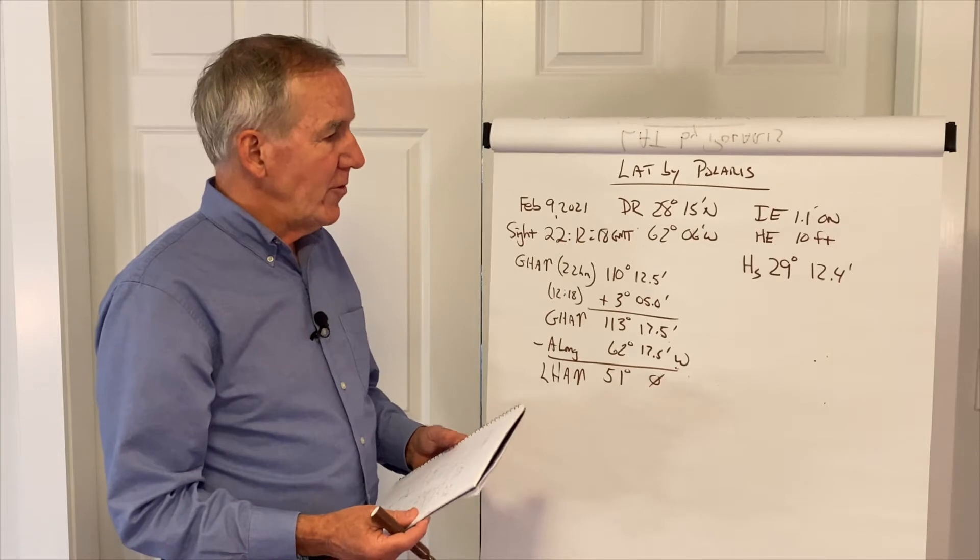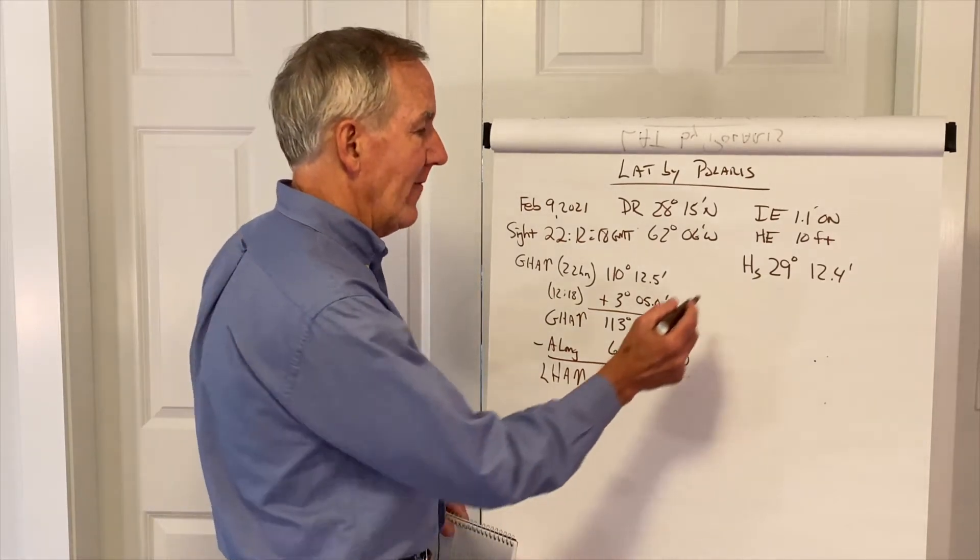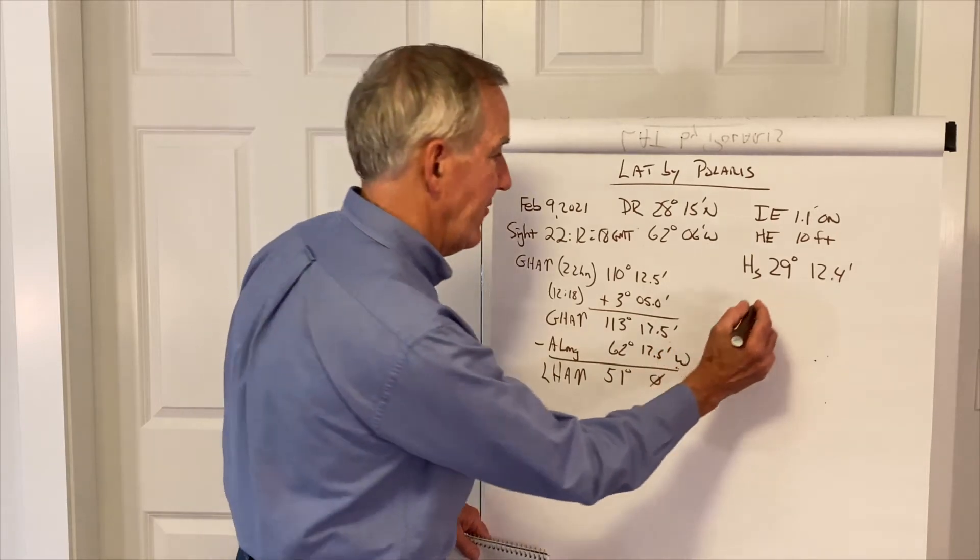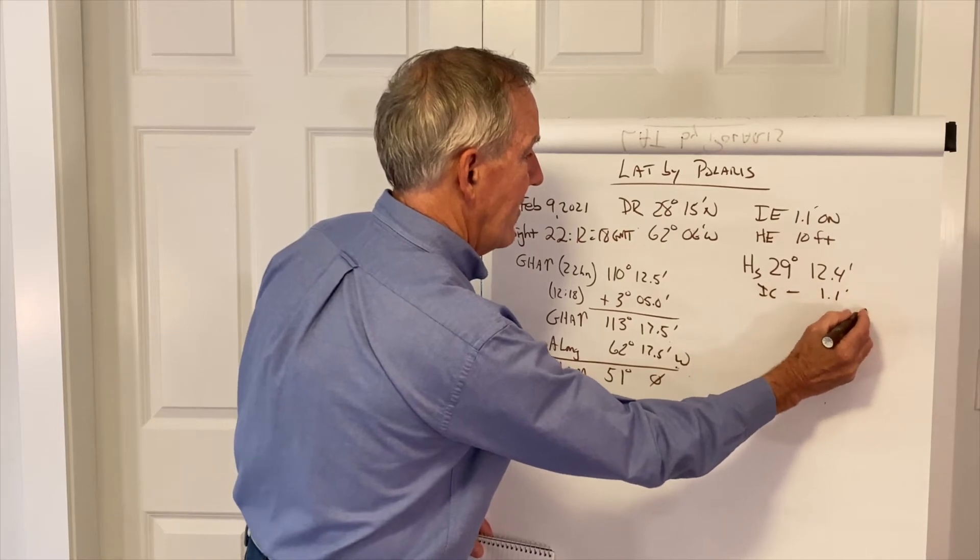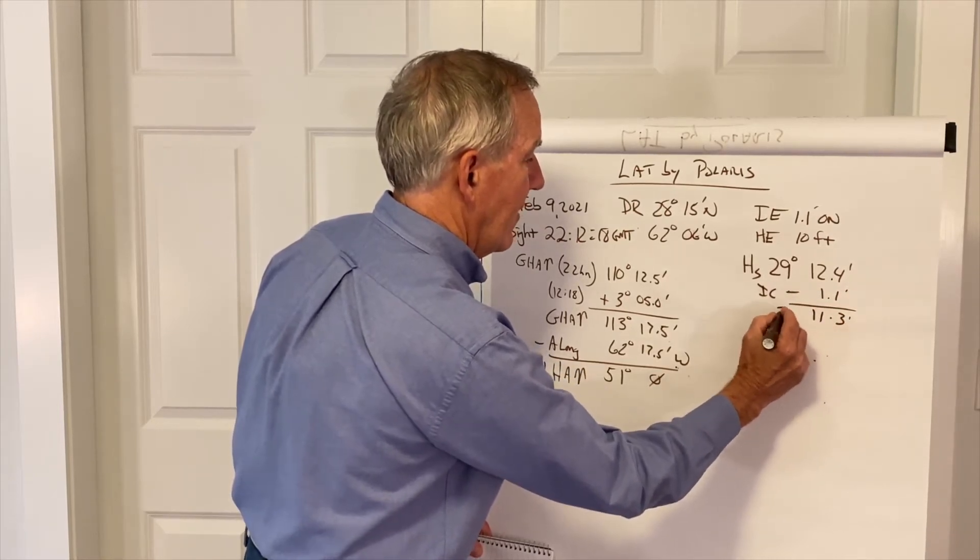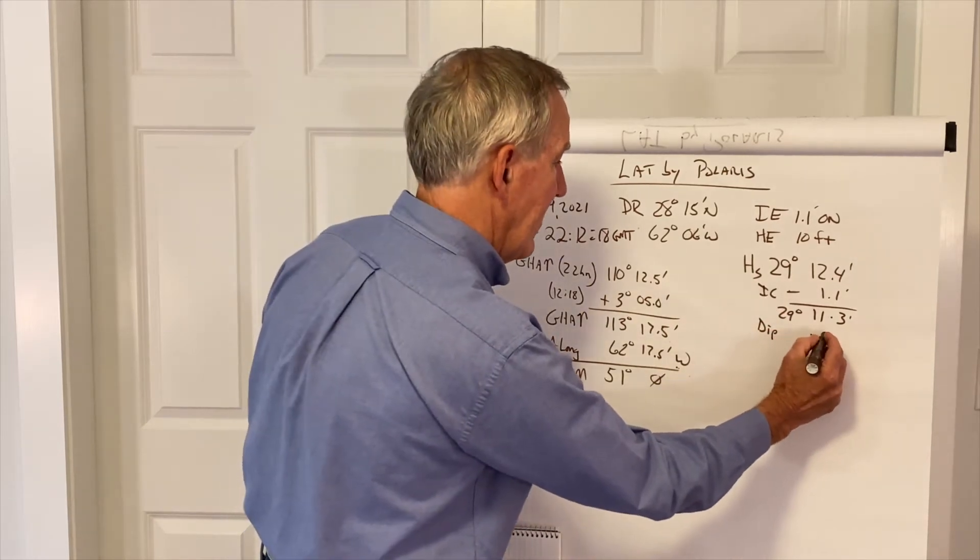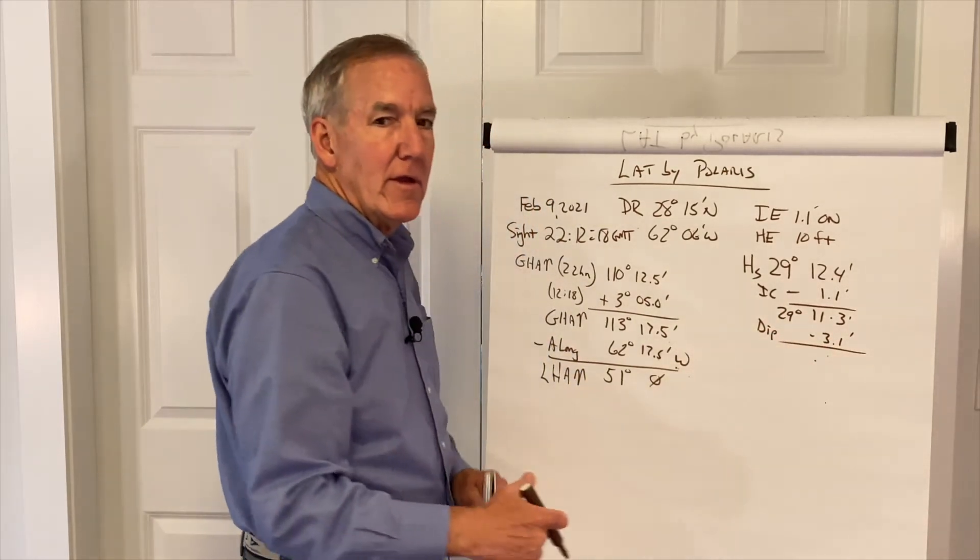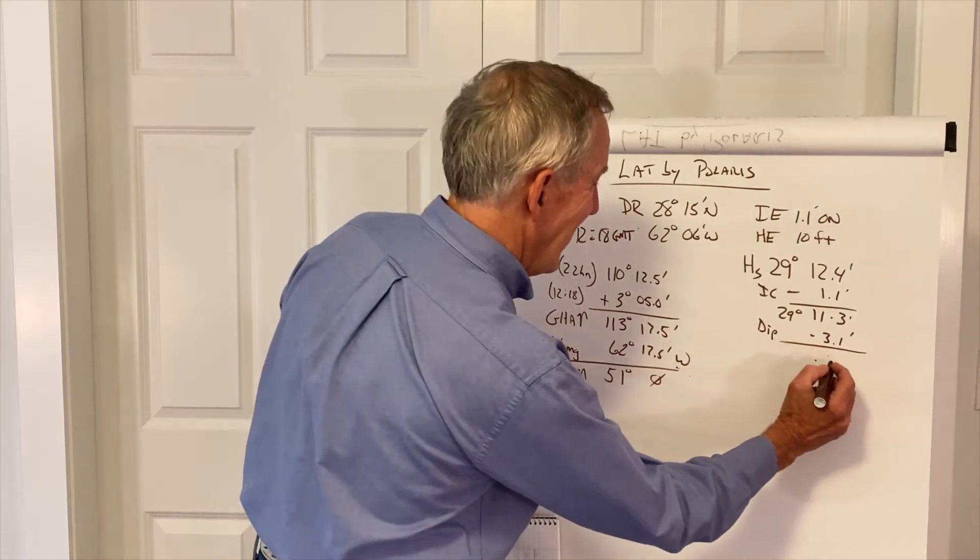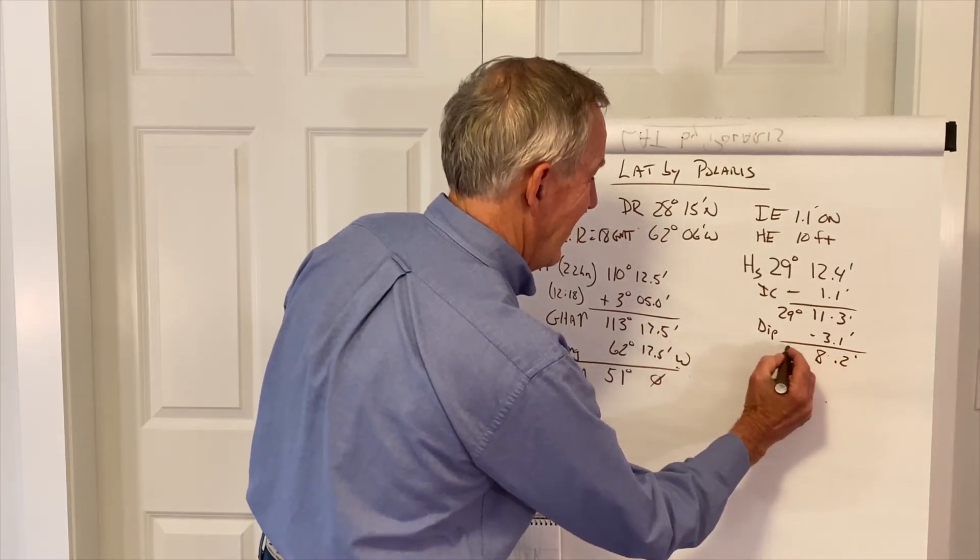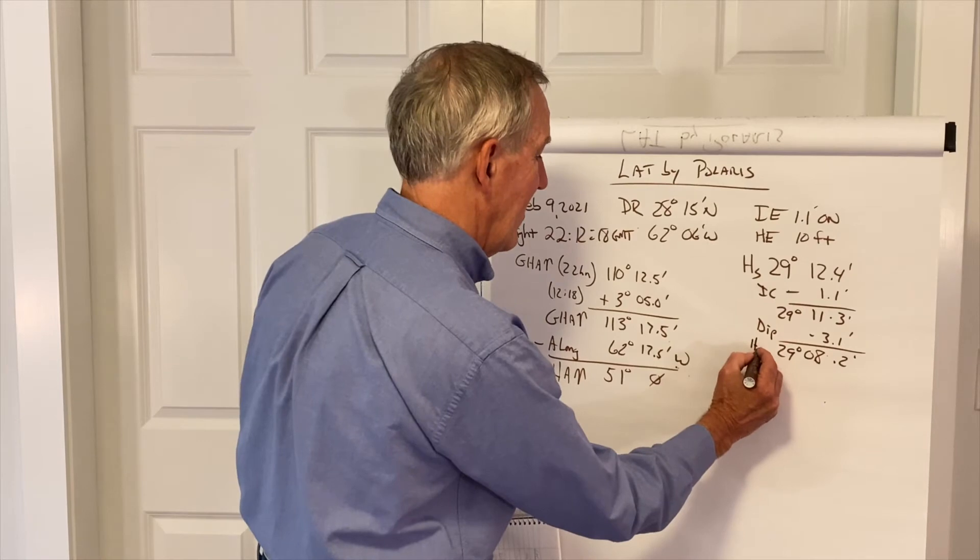Now, the next thing we do is we go to the altitude correction tables in the front of the book after we apply our index correction and our dip correction. The index correction, if the error is on, the index correction is off. Take that, subtract, and then our height of eye, our dip correction for 10-foot height of eye from the dip table. Dip correction is always 3.1 for 10 feet. So 29 degrees, 8.2 minutes is our apparent altitude.